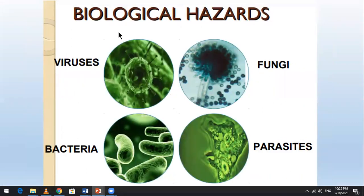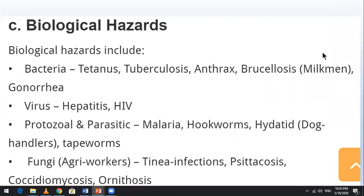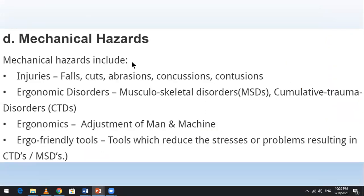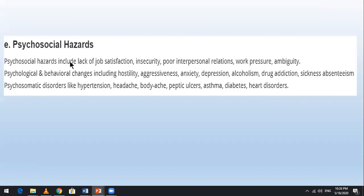Biological hazards are the third category and include viruses, fungi, bacteria, and parasites. Mechanical hazards are the fourth category and involve injuries from falls and machinery. Psychological hazards include lack of job satisfaction, poor interpersonal relations, and work pressure.